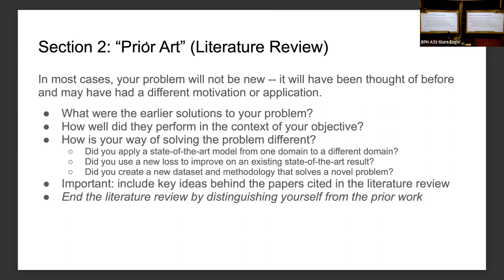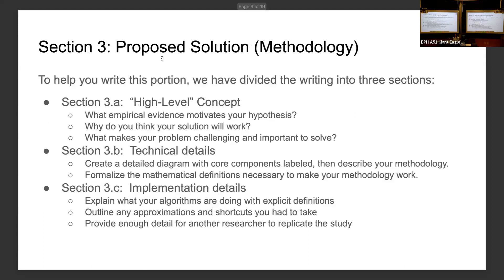Section two is the prior art or literature review. This is where you would start your work as well — performing a lot of literature review to know what you want to work on. It may not be a new problem, but your motivation for why you are doing it and how you arrived at it is mainly what the literature review covers. Discuss what earlier problems existed, how they were tackled, and summarize what you are doing. After the literature review, you will have an idea of the state of the art, different architectures, and methodologies other papers have used. Then identify what new contributions you want to make.